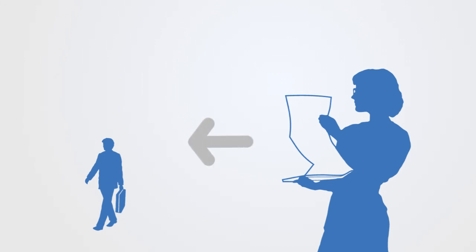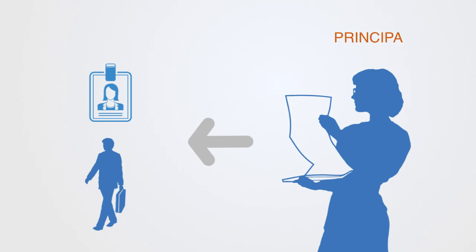She sends one of her employees, James, to make this order. James is now acting on behalf of Kate. He is a legal agent — a party that is legally authorized to act on behalf of another. Kate is considered the principal in this relationship, meaning that she has given authority to another to act on her behalf. Both principal and agent can be individuals or organizations.